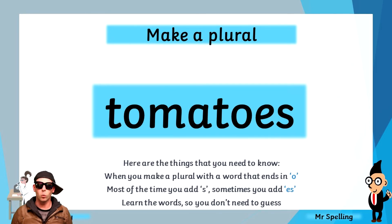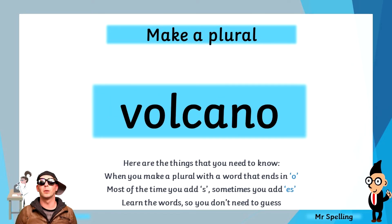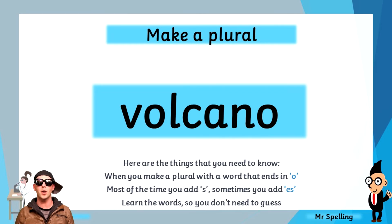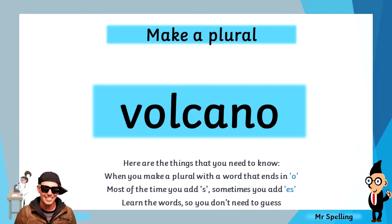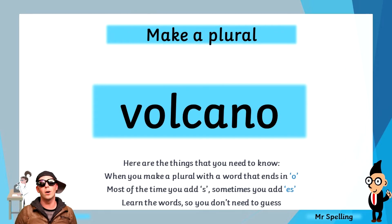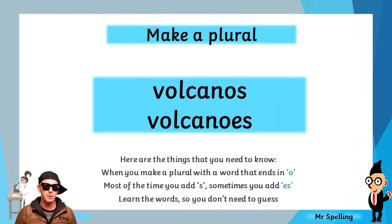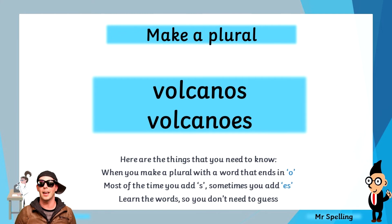Our final word is volcano. To make plurals of this word, are you going to add S or ES? Well, whatever you picked, you are right — because it's one of the words where both S and ES are acceptable, and volcano becomes either volcanoes or volcanoes with an ES.